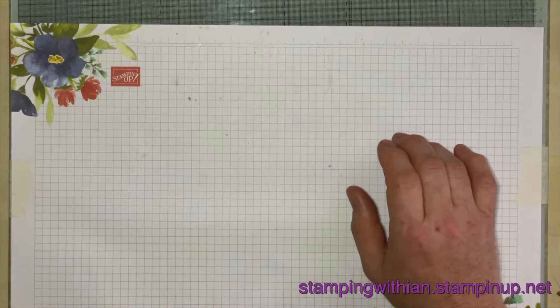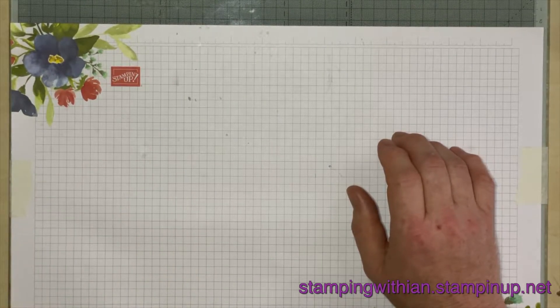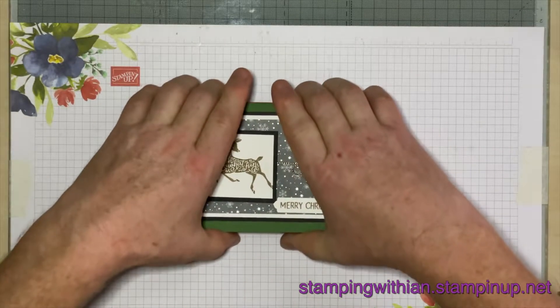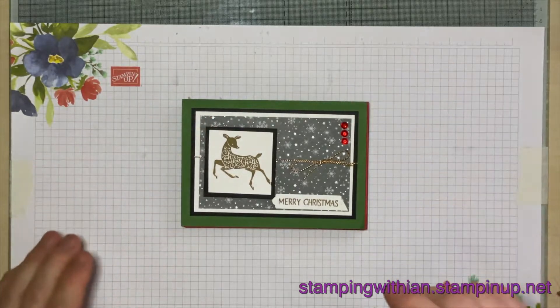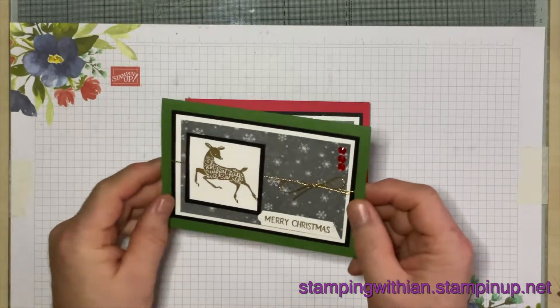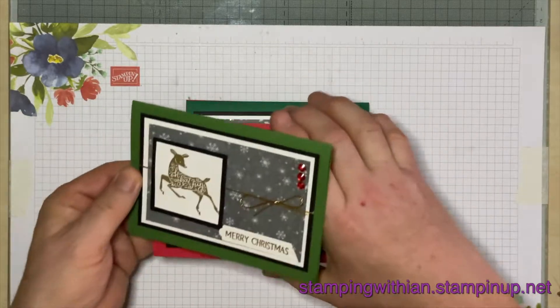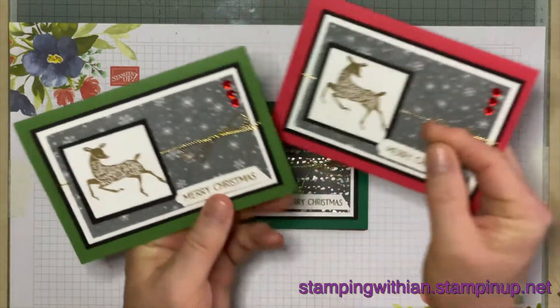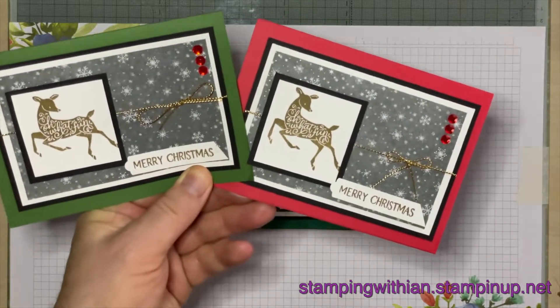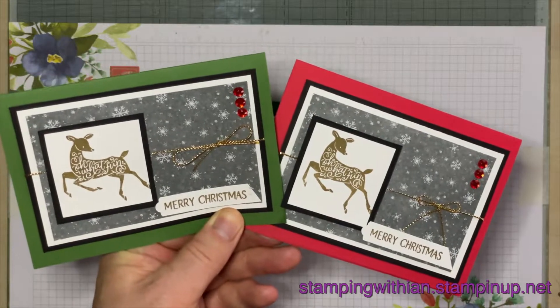Anyway, I digress. I've made four different versions. Well, kind of two different versions really. These were the first two. This is in Garden Green and Poppy Parade. Make sure you can see those. You can. That's lovely.